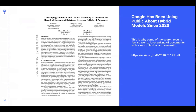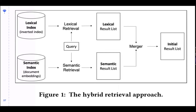Google has been doing hybrid semantic and lexical search for a while, and has been public about it since 2020. In their paper they discuss doing it with open-source tools including BERT and BM25, which is like the best version of TF-IDF, and how to fuse them together. The process looks like this: pull results from the standard inverted index, do the same on the semantic side using vector embeddings, get two result sets, merge them, and re-rank based on various factors.